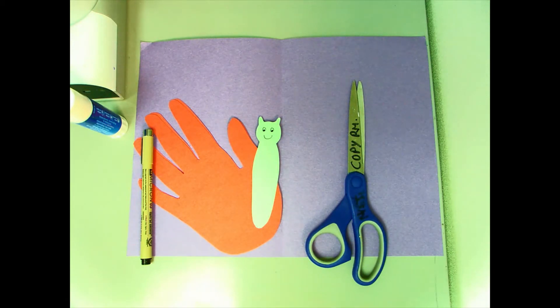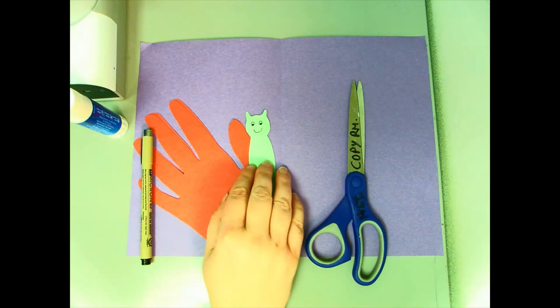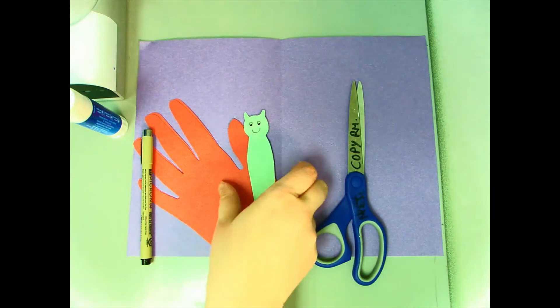I've already cut out one of my sets of wings because I didn't need to show you both of them, so I can move those and my caterpillar body which I've decorated with eyes and a little smile off to the side. If you wanted to use googly eyes you could use that as well.